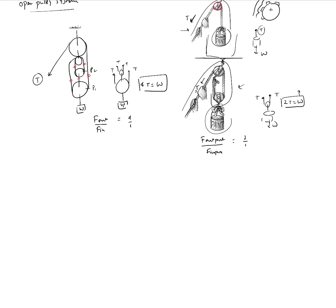Now what is the catch? When you gain on the forces, the catch is that you will be pulling the rope four times as much. So if the load goes up by one foot, then you will have to pull the rope in this direction by four feet. But that may not be a problem — if this is connected to a motor and you have a winch system with the cable going all around it, you can get the mechanical advantage while you lose on the distance.